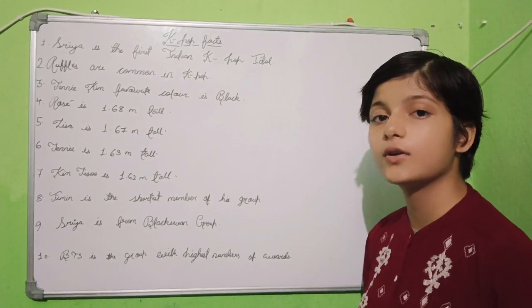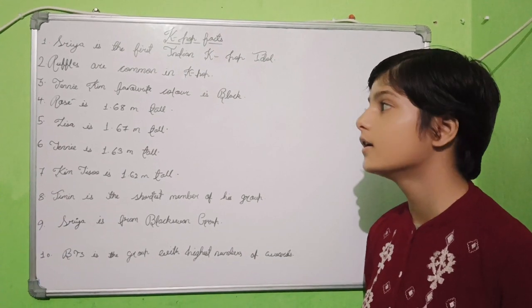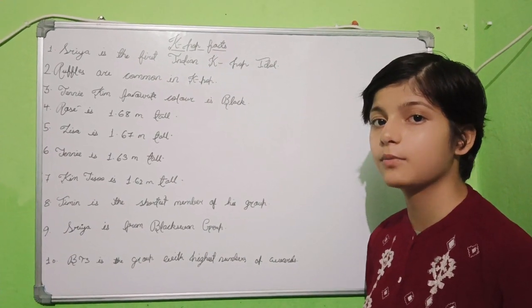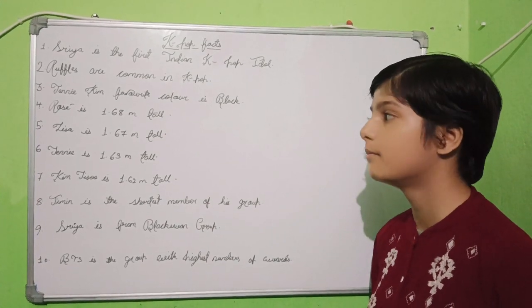Number 4: Rosie is 1.68 meters tall and she is the tallest member of the group Blackpink. Number 5: Lisa is 1.6 meters tall and is the second tallest member of this group Blackpink.